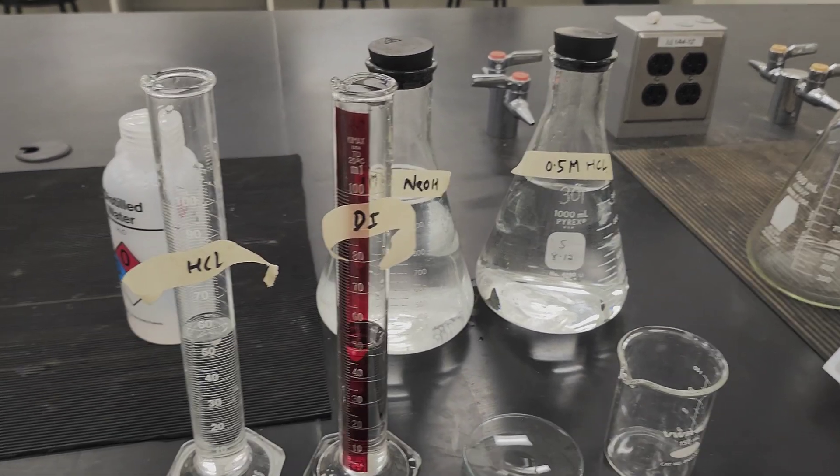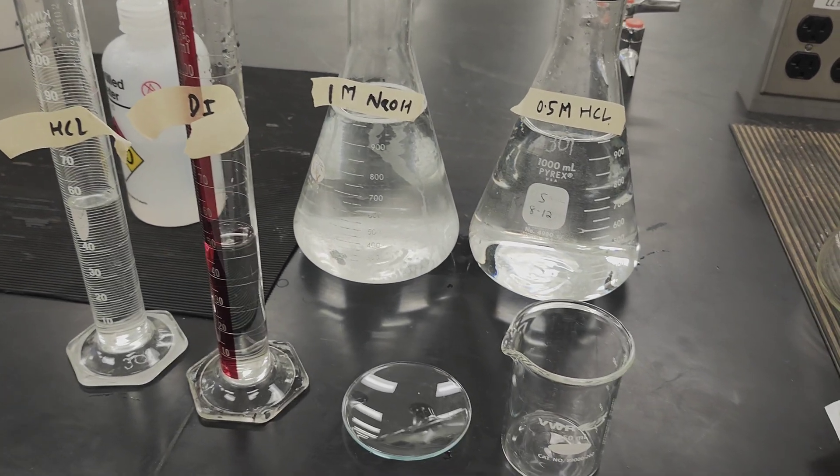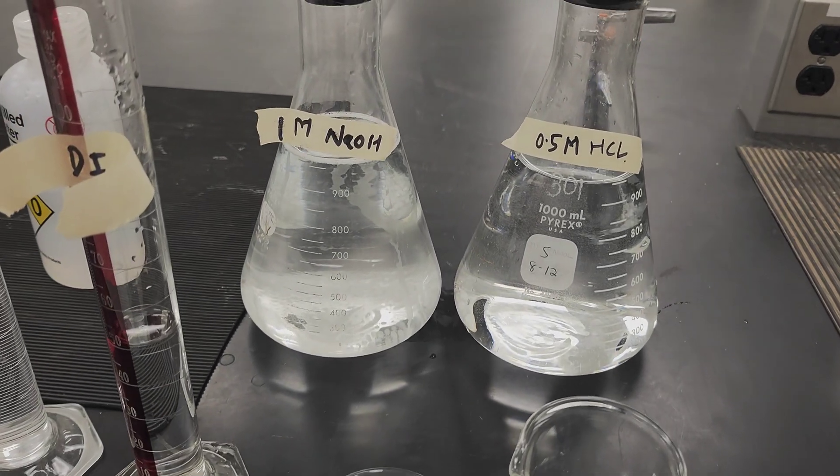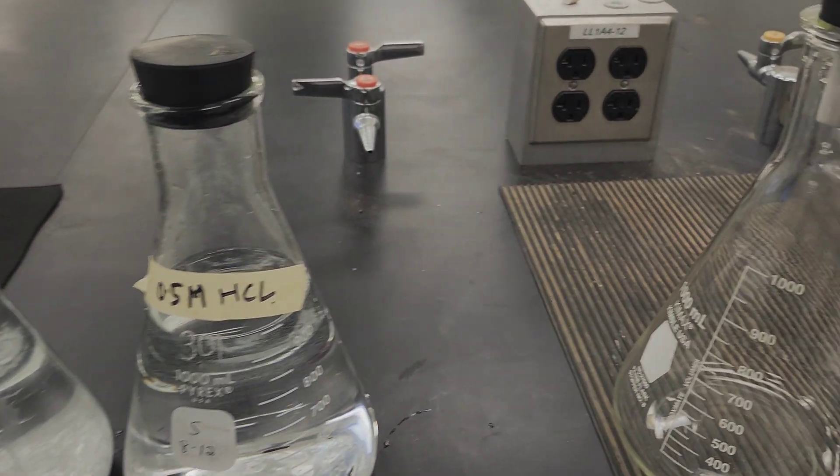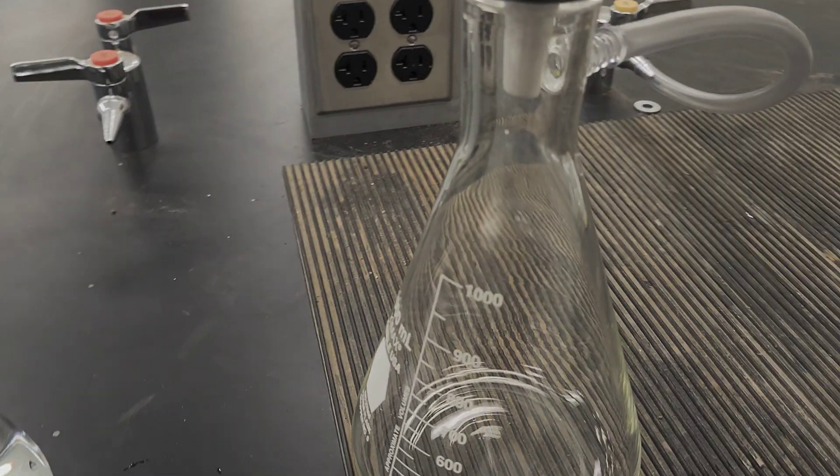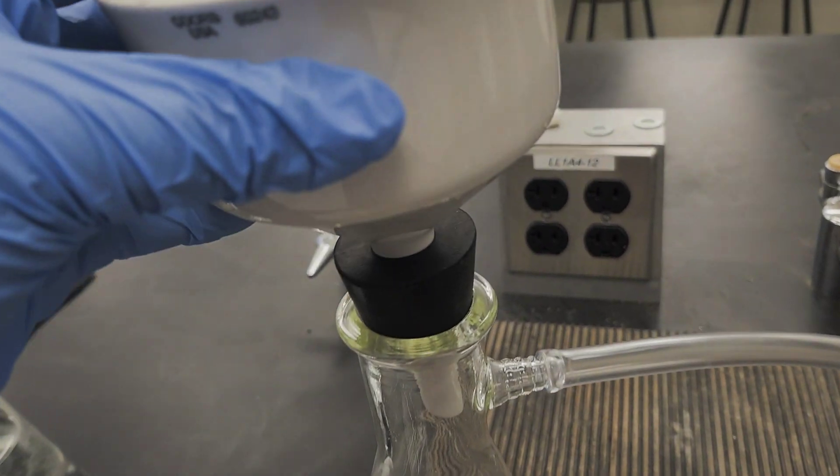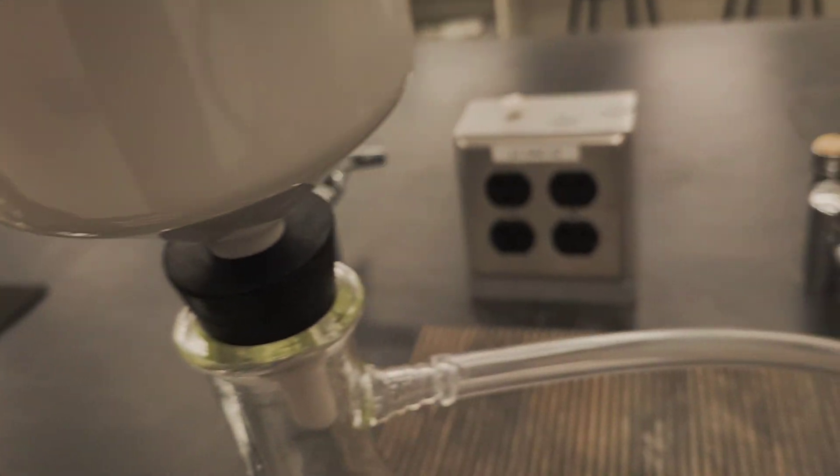This lab is for soil carbonate analysis. We need 10 grams of air dried soil, 0.5 molar hydrochloric acid, 1 molar sodium hydroxide, and other equipment like beakers and cylinders as shown in the video. This is a Buchner funnel which is connected to a vacuum for fast filtration.